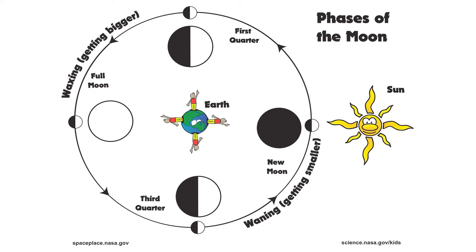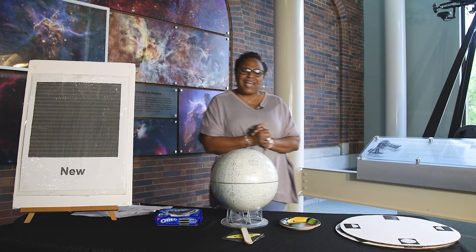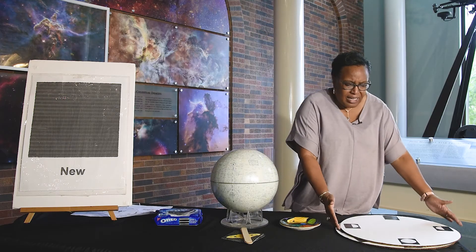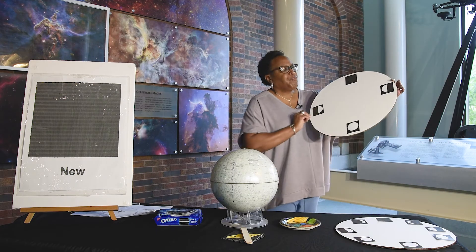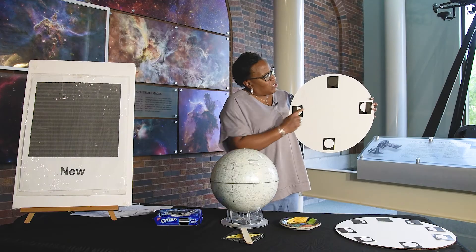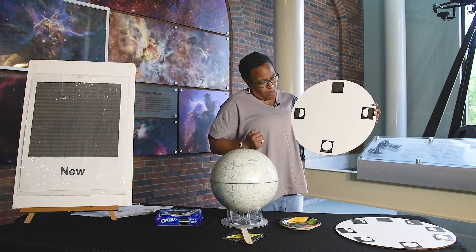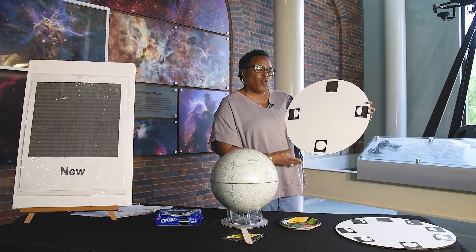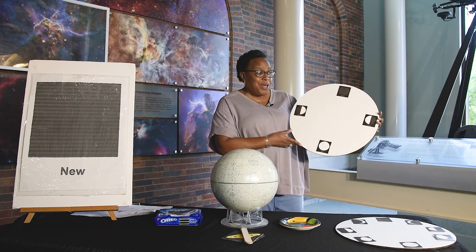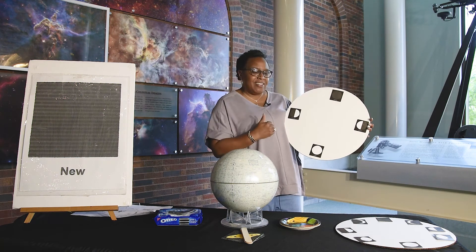You're also going to need a NASA placemat. If you download this activity from our website, it will have a NASA phases of the moon placemat attached. The NASA placemat only takes you through the four basic phases: the new moon, the first quarter moon, the full moon, and the last or third quarter moon. But today, when we do our phases of the moon, we're going to do all eight phases.